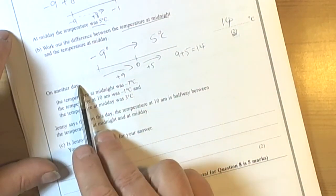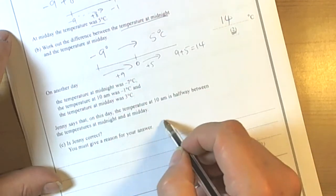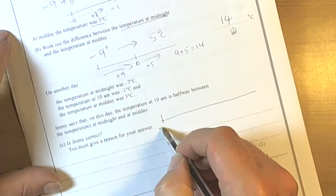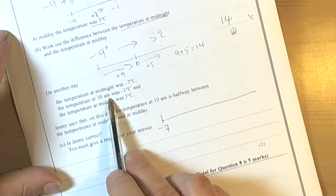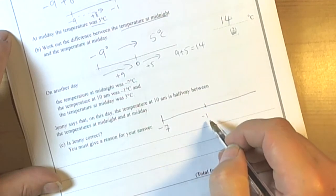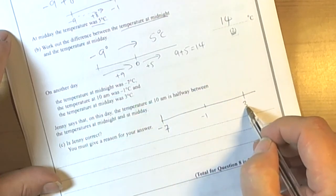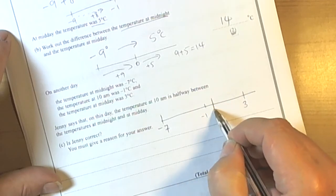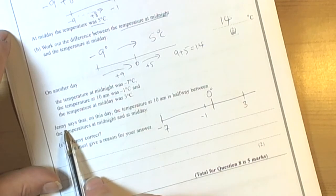The next part of the question, so another day now. The temperature at midnight was minus 7. So again if we think about how the number line is working, we're starting at minus 7. The temperature at 10am was minus 1. So somewhere along here minus 1. And the temperature at midday was 3. So we've gone past the 0. So let's have a look at what they're asking us to do then.